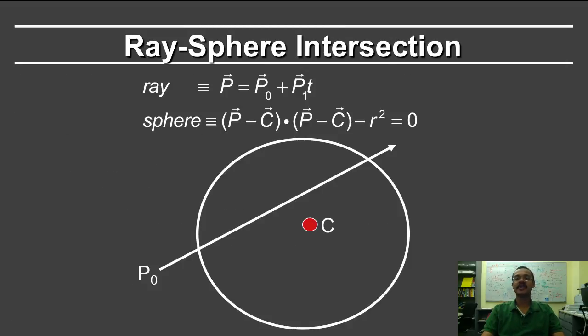First let's consider ray-sphere intersection. In your ray tracer, we ask you to do spheres and triangles. The formula for a ray has an origin point P₀, and it has a direction P₁ as well as a distance along the ray t. The sphere is given by the standard equation, which is that the distance squared from the center is given by r squared. And we want to find the intersection points.